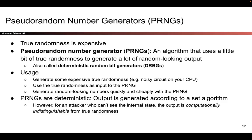Note that PRNGs are deterministic, so if you feed in the same bits of true randomness twice, you will get the same random-looking output. After all, the PRNG is just a piece of code, so if you feed it the same inputs you will get the same outputs. However, if your PRNG is designed to be secure, then we can say that the output is computationally indistinguishable from true randomness.